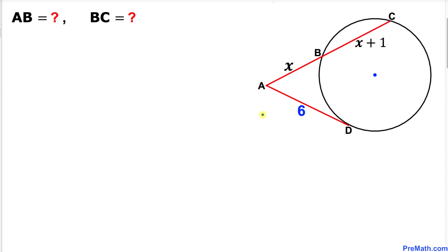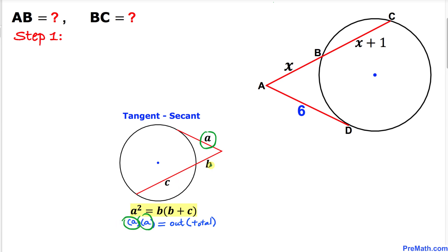Let's get started with the solution. Here's our first step: let's recall the tangent-secant rule. The rule is that the tangent a times a equals, for the secant, the outside b times the whole thing, b plus c.